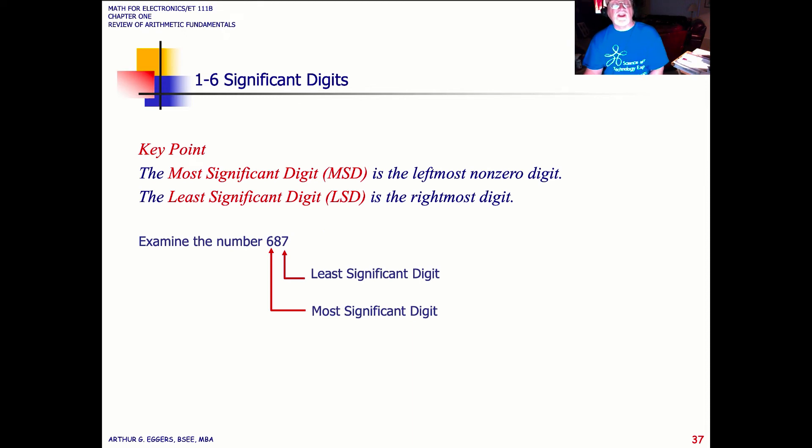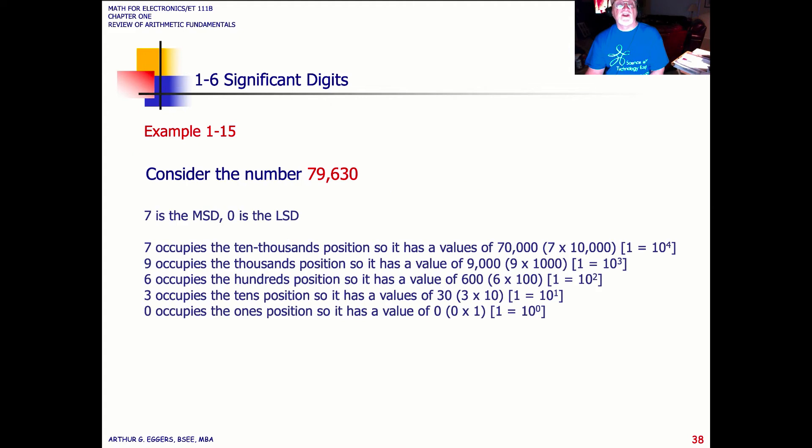Getting used to what is the most significant and the least significant digit, MSDs and LSDs, usually it's pretty simple. The first one to the left is the most, the smallest one to the right is the least significant digit. So we can take this number, 79,630, and identify each of its weighted positions and determine from this what is the most and what is the least significant. This is stuff that you just have to be aware of because when you are doing calculations, these are things that become important for maintaining accuracy.